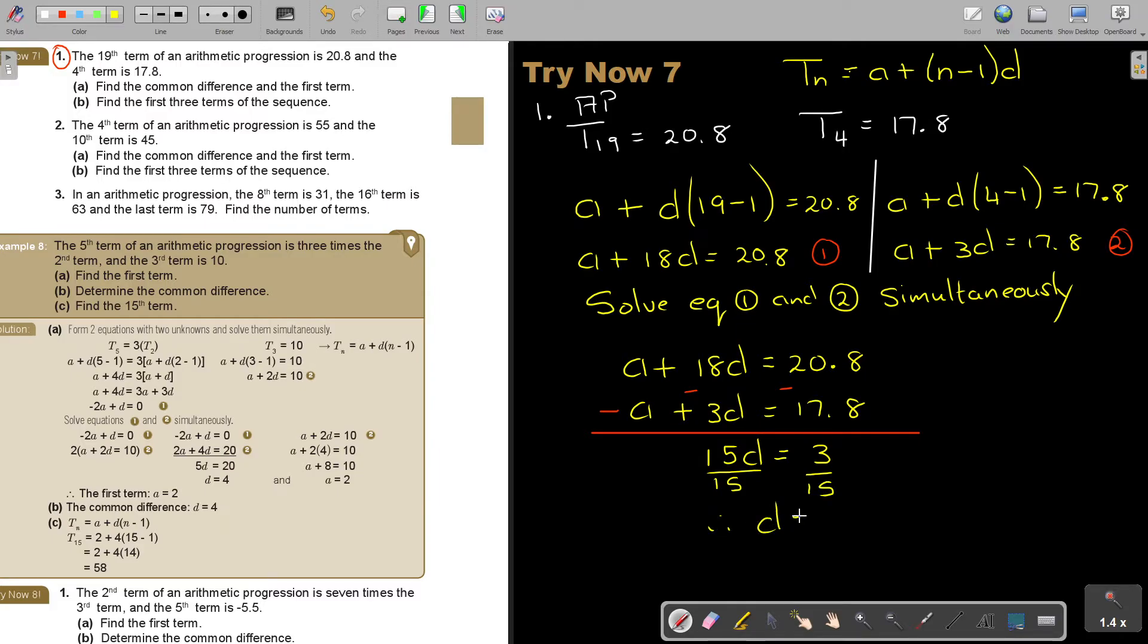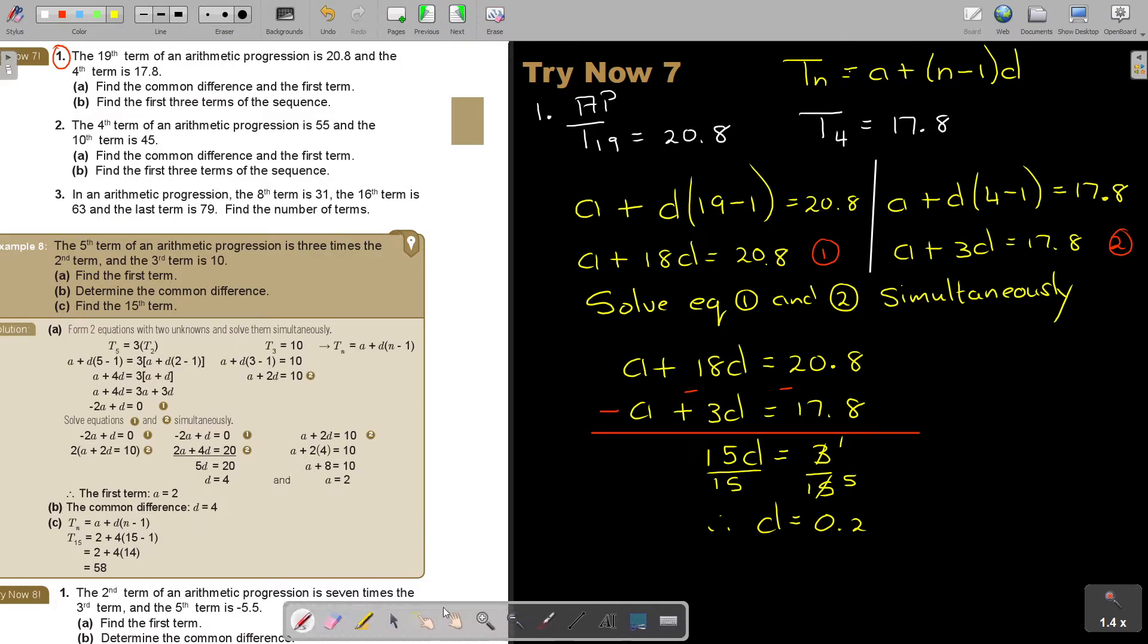Therefore, the value of D will be 0.2. Because 3 can go in 1, it can go in 5. 1 over 5 is 0.2. And now I just substitute.